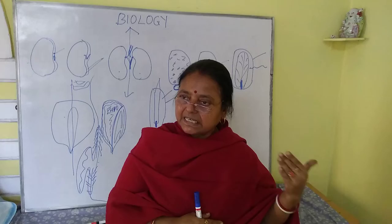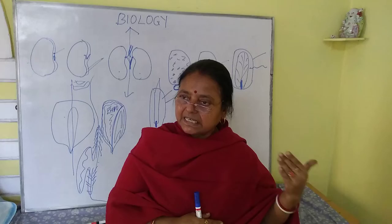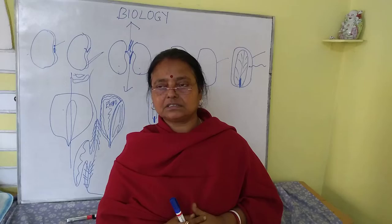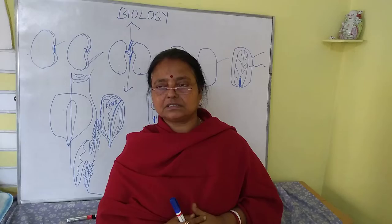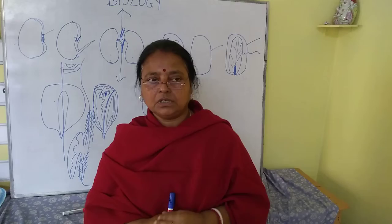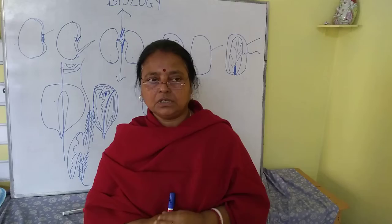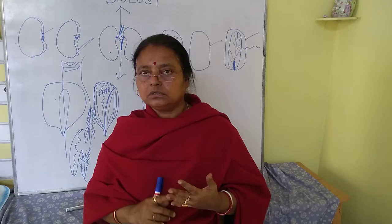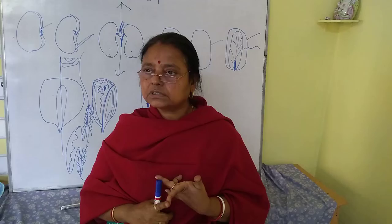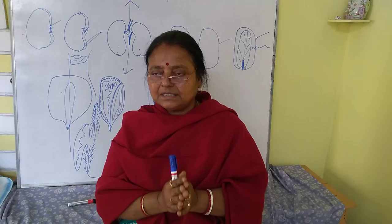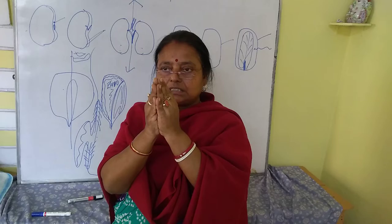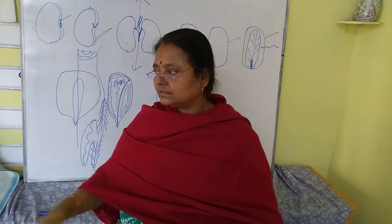The dry fruit can be divided into dehiscent and indehiscent. Dehiscent fruits burst to release the seeds; indehiscent fruits do not burst. Indehiscent examples include achene, caryopsis, nuts, and samara. Dehiscent examples include legume, follicle, silique, silicula, and capsule. Think of the pea — the fruit bursts along both margins, the two parts twist up, and the seeds are scattered.